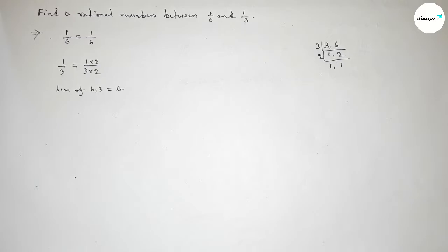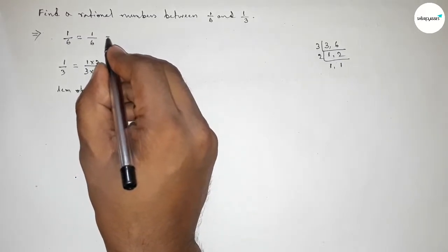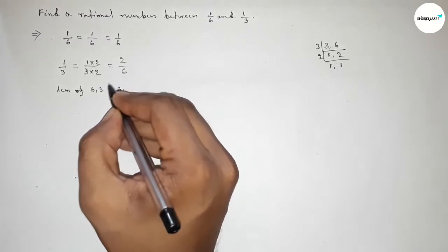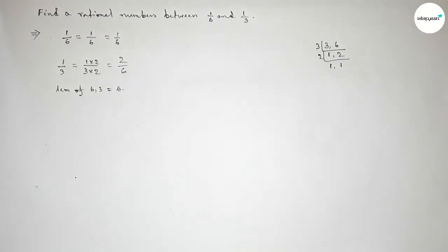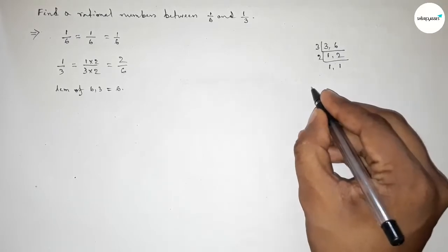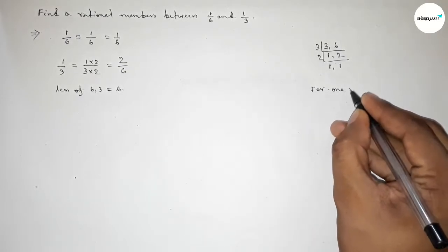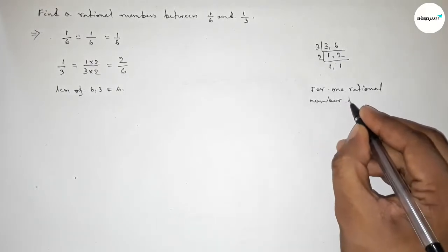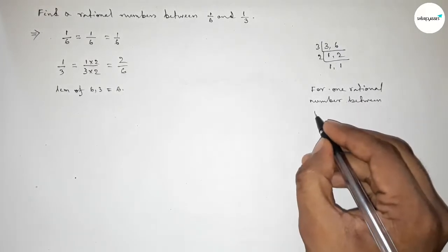Okay, now an important method: for finding one rational number between any two numbers, we have to follow this method. We should multiply both numbers by 1 plus 1 equals 2, so multiplying by 2.